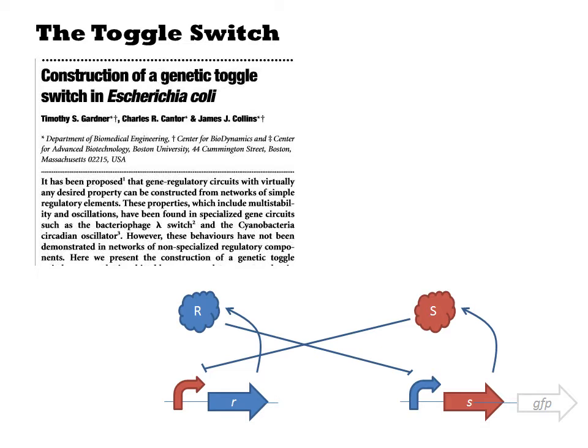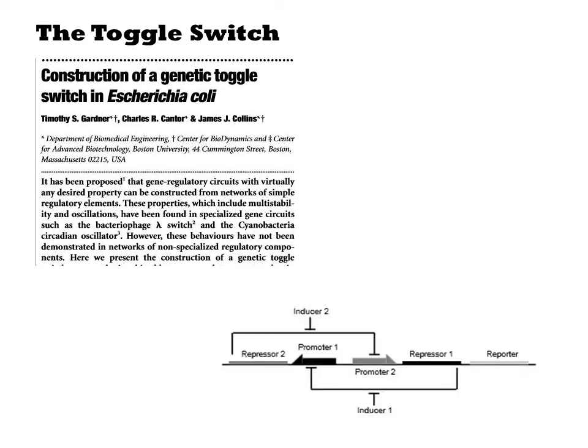The toggle switch is based on two mutually repressing transcription factors. They draw the comparable diagram as such where our R and S are designated repressor 2 and repressor 1. Other than labeling, these are equivalent diagrams.